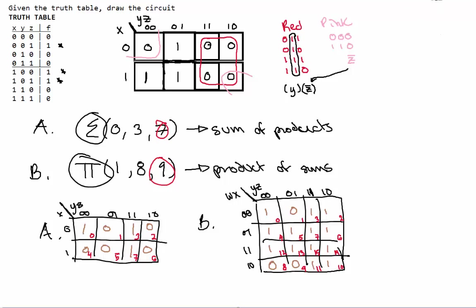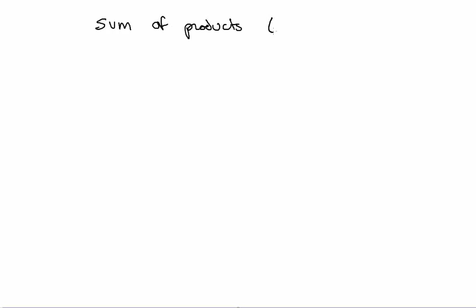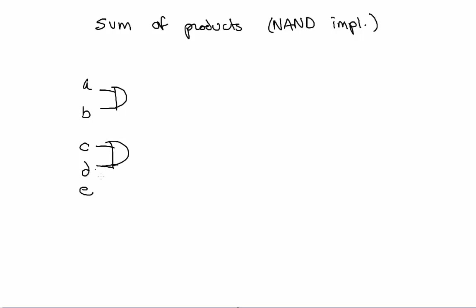We're going to get into NAND and NOR gate implementation now. For NAND gate implementation, the boolean function that you're given has to be in sum of products. Let's say we have a circuit with inputs A, B, C, D, E. These will be ANDed because we're doing sum of products, so your leftmost gates will be ANDs. Here we have a floater E. All these will get plugged into an OR gate and will become F at the end.